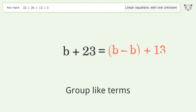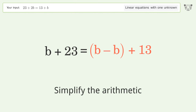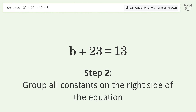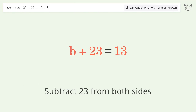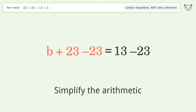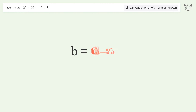Simplify the arithmetic and group like terms. Simplify the arithmetic again. Group all constants on the right side of the equation: subtract 23 from both sides, then simplify the arithmetic.